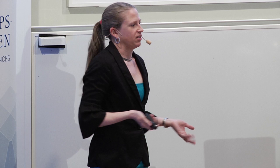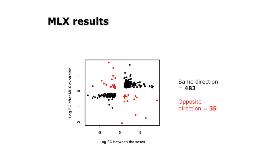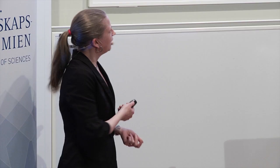This fit quite well with our expectations and confirmed that it wasn't just that there's selection on the X but that it can actually respond to selection. We also saw that if you look at the sexual dimorphism in the population — male-biased on the right and female-biased on the left — and then the change after evolution in the male-limited X (MLX) populations, it was almost always in the same direction: 483 times out of 518, the change in the experimental populations was increasing the sexual dimorphism that was already there to begin with.